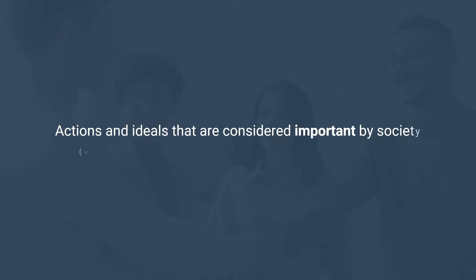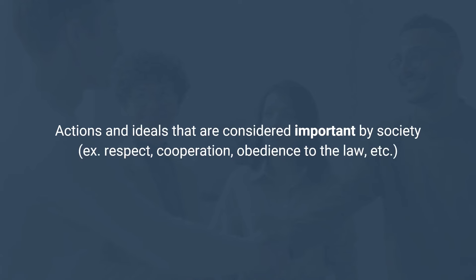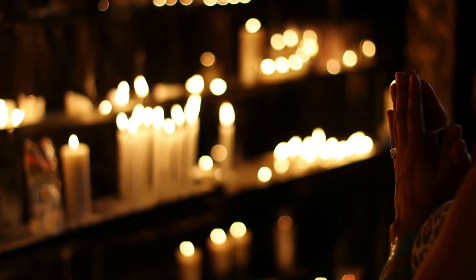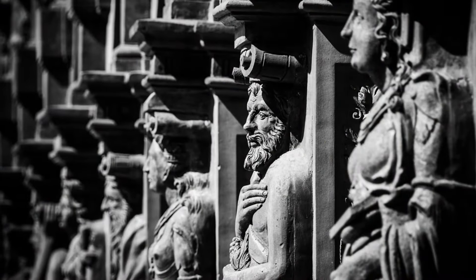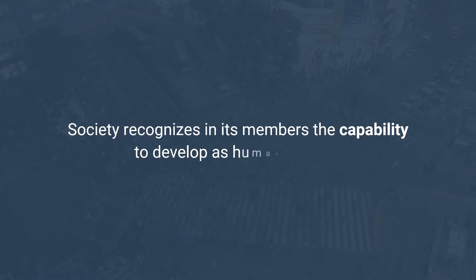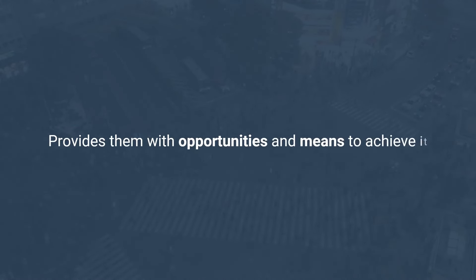Another very important way society shapes human persons is through social values — actions and ideals considered important by society, such as respect, cooperation and obedience to the law. Still other aspects of society that help form human persons are religion, language, history, etc. All these point to the fact that society recognizes in its members the capability to develop as human persons, and as such, it provides them with the opportunities and means to achieve it.